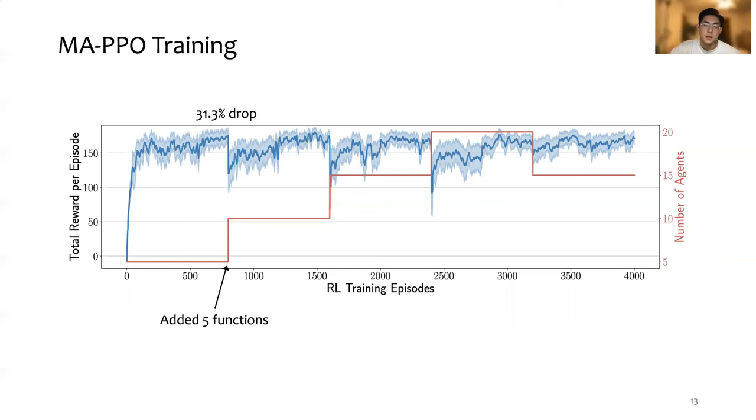Then at episode 800, we updated the multi-tenant environment by adding five functions, each of which is controlled by a different MA-PPO agent. As shown in the figure, the total reward per episode dropped around 31%. It was mainly because the added five new agents were learning the optimal policy, which led to low reward.